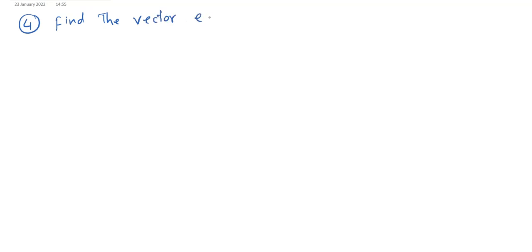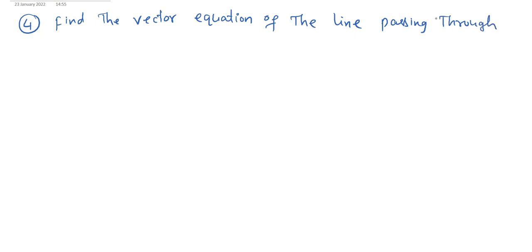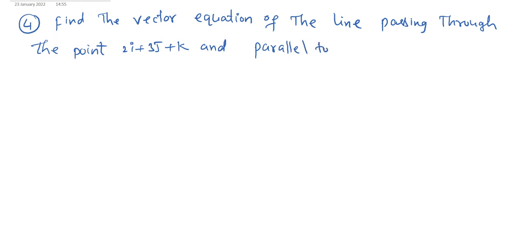Fifth question: Find the vector equation of the line passing through the point 2ī + 3j̄ + k̄ and parallel to the vector ī − 2j̄ + 3k̄.